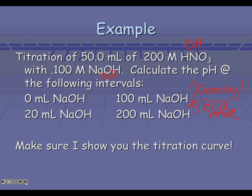The last part is really dependent on what kind of problem you're working with. If it's strong-strong, you wouldn't do an ICE chart. You wouldn't do Henderson-Hasselbalch that we used before. But the majority of problems are going to be weak, so make yourself a note that we're going to ICE it, or we can use the Henderson-Hasselbalch equation again. That third step is really dependent on where you are in the titration, so you have to be careful.